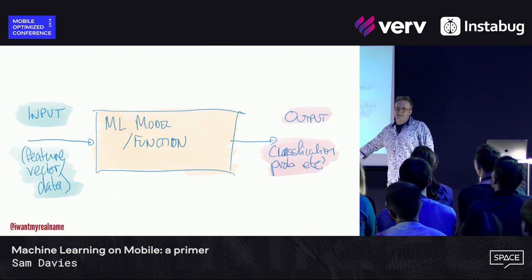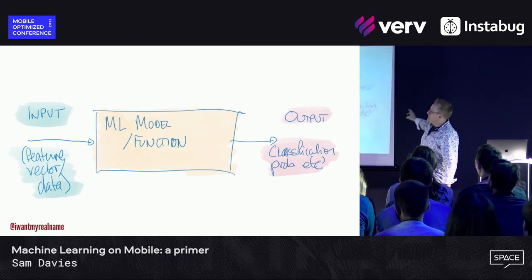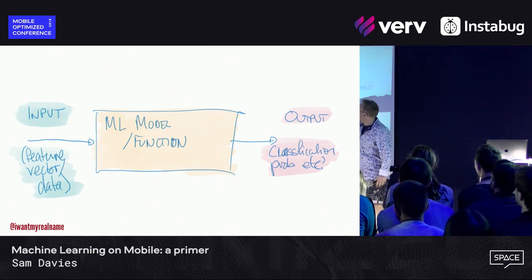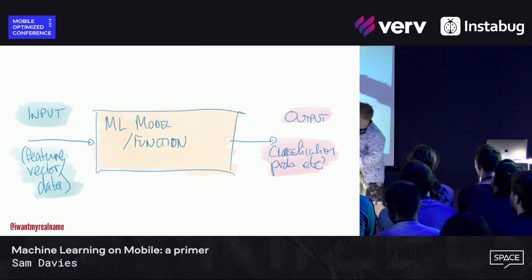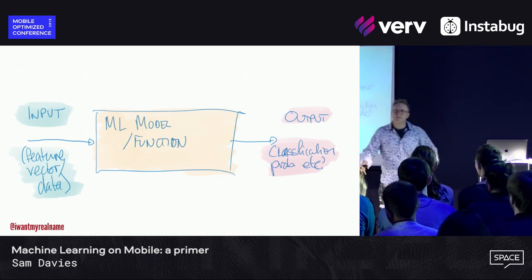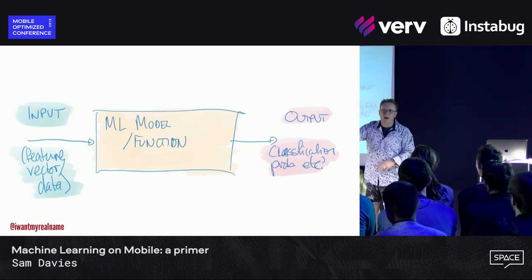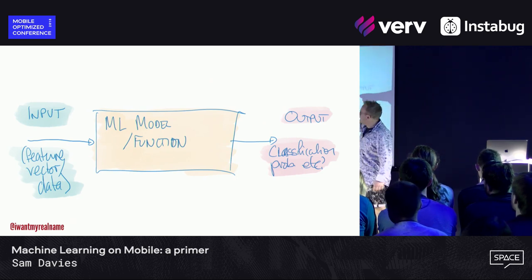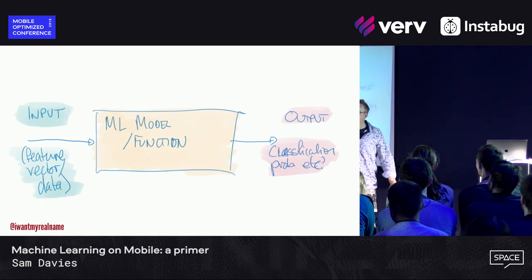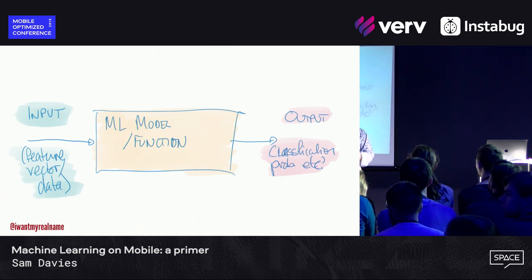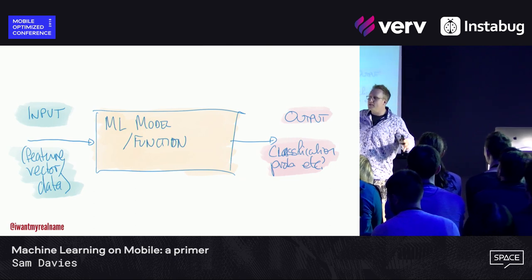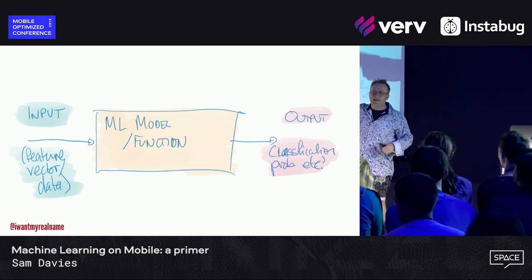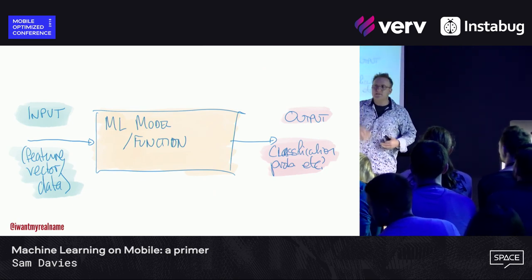I decided to draw my own version of that diagram, because actually it is only three steps. On the left-hand side you've got input, you've got a box in the middle, and you've got some output. That sounds very much like stuff that we do every day. We write this box in the middle — it's a function. We have some input, we do something to it, and then we get some output. That is exactly what we do every day. The difference with machine learning is I don't know what this box is. Normally when I sit down and write some code, I know what I want the function to do and I know how the function is going to work. With machine learning, this box in the middle is done for you by the computer — by the machine. The machine learns what this function is, and that's basically all it is. It's a function that we don't write — the machine writes it for us based on some data that we've given it.